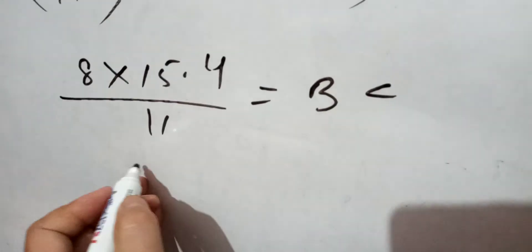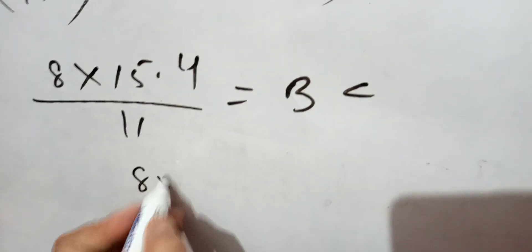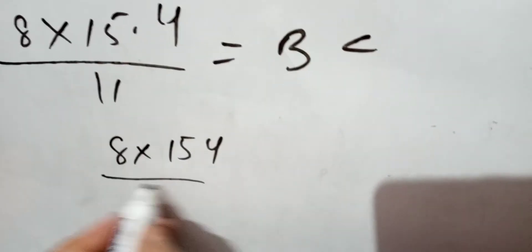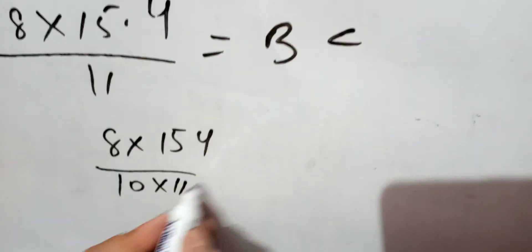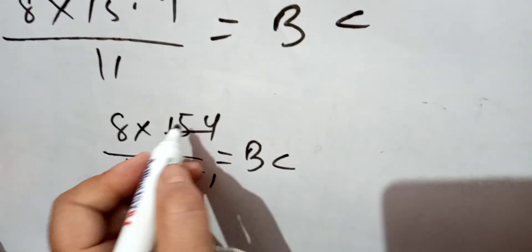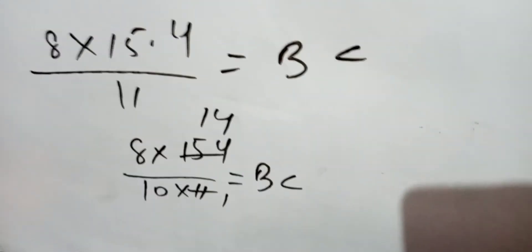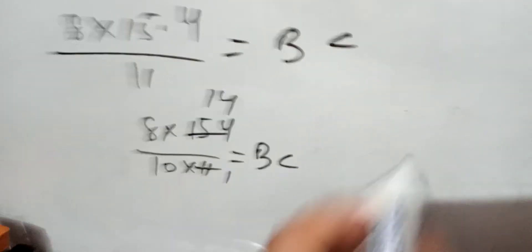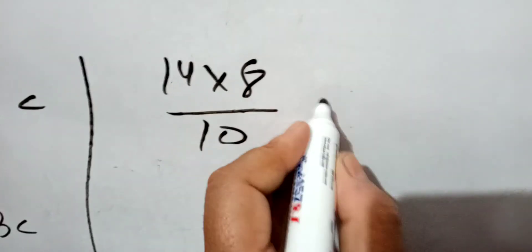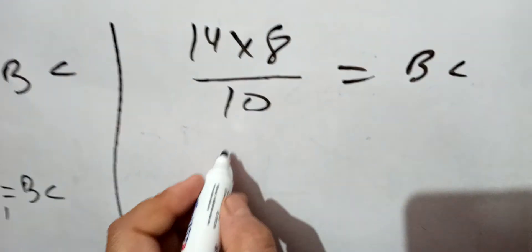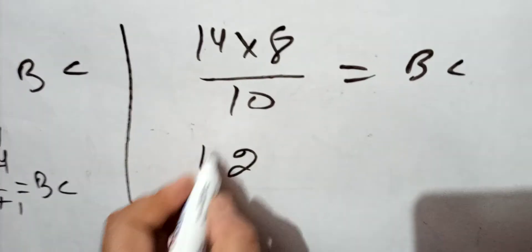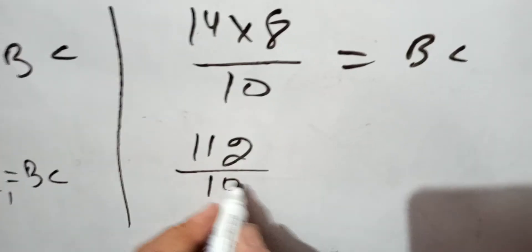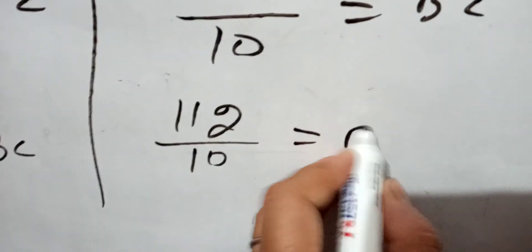So now we're calculating: 8 into 15.4, this will be 11 times... 11 into 14 which equals 154. So after that, 14 into 8 divided by 10 equals BC, which is 112 by 10 equals BC.